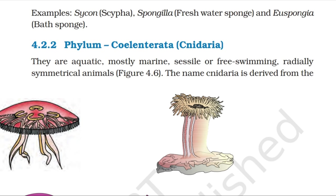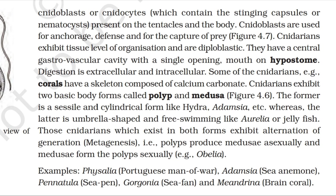Topic 4.2.2: Phylum Cnidaria or Coelenterata. They are aquatic, mostly marine, sessile or free-swimming, radially symmetrical animals. The name Cnidaria is derived from the cnidoblast or cnidocytes, which contain the stinging capsules or nematocysts present on the tentacles and the body. Cnidoblasts are used for anchorage, defense and for the capture of prey. Cnidarians exhibit tissue level of organization and are diploblastic. They have a central gastro-vascular cavity with a single opening, the mouth on hypostome. Digestion is extracellular and intracellular. Some cnidarians, e.g., corals, have a skeleton composed of calcium carbonate.